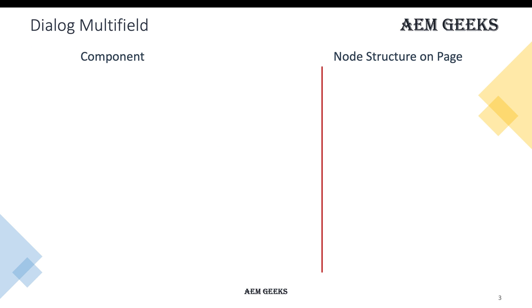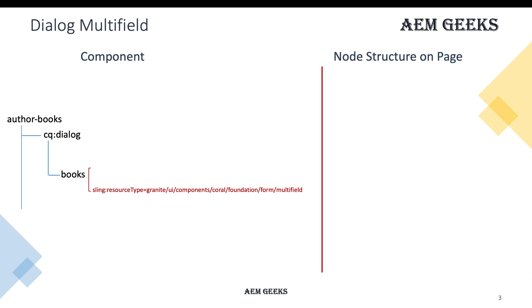To understand multifield, you need to understand how it will be created inside a dialog in Touch UI, what node structure is created when you drag and drop that component, and how it's stored in the repository after editing on a page. For this tutorial, I'll be creating a component called 'author-books' throughout.